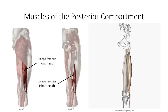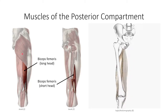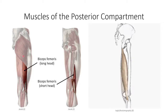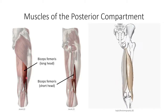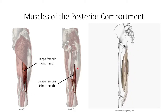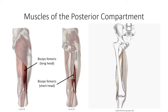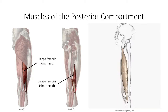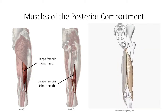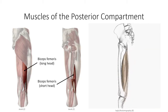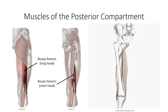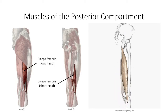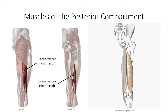The long head runs obliquely from its origin off the ischial tuberosity to insert laterally on the head of the fibula. The short head takes a more direct route, originating off the posterolateral surface of the distal shaft of the femur. It blends with the long head to insert on the head of the fibula.